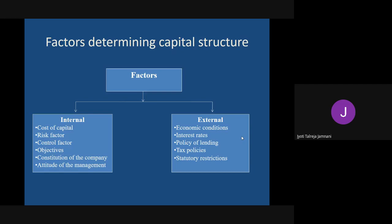The second external factor is interest rates, which keep fluctuating with economic conditions. If rates are too high, go for equity; if low, go for debt. The third external factor is the policy of lending - the terms and conditions of banks or debenture holders. If terms are too strict and stringent, you will borrow less and rely more on equity. But if policies are favorable and government incentives or subsidies make loan rates low, you will borrow more.